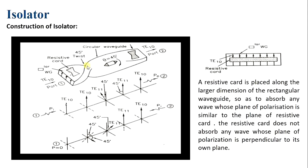Consider a signal applied to port 1 — a dominant TE10 mode is excited with a vertical electric field vector. This vertical electric field passes through the resistive card near port 1. Since this electric field is perpendicular to the resistive card, the card allows the electric field to pass through it.